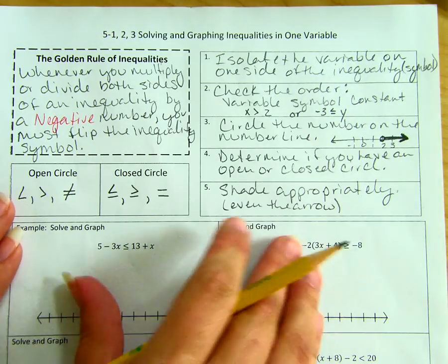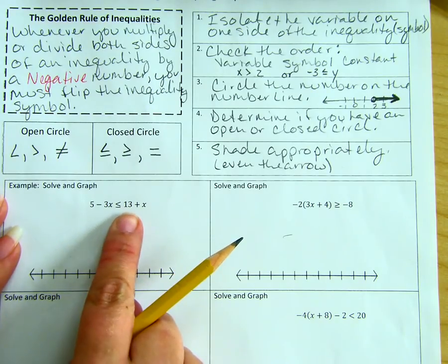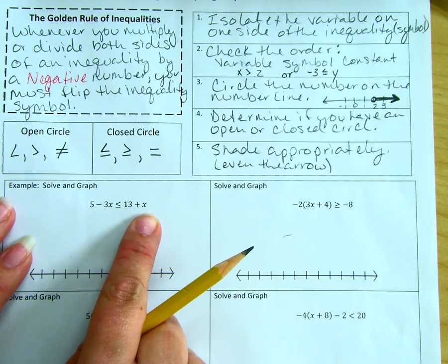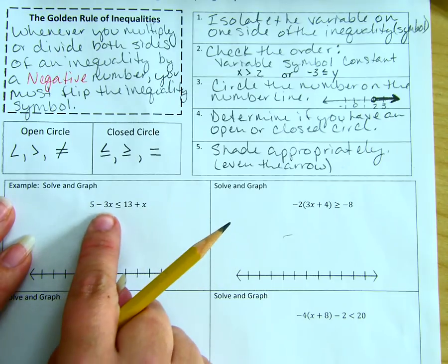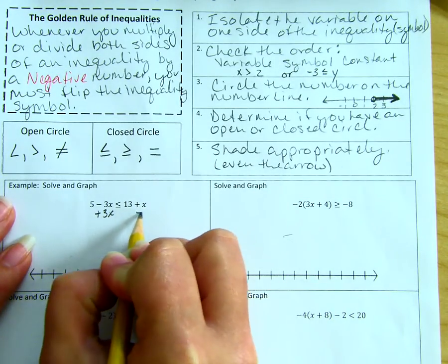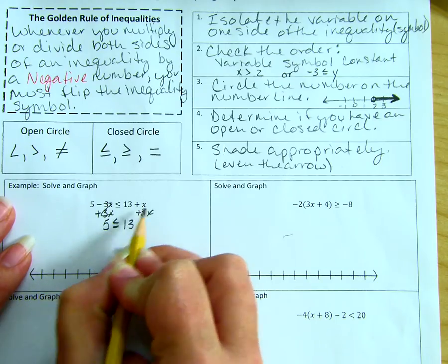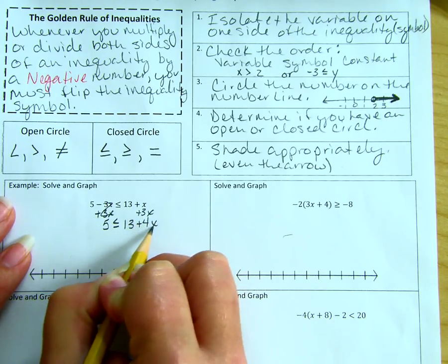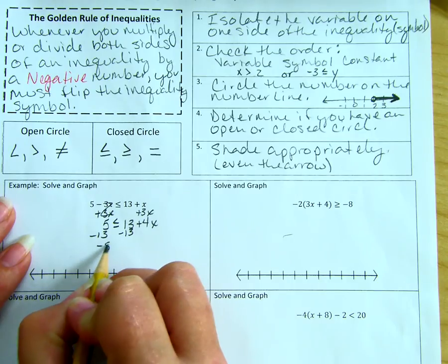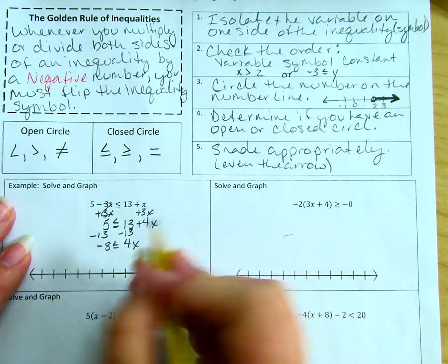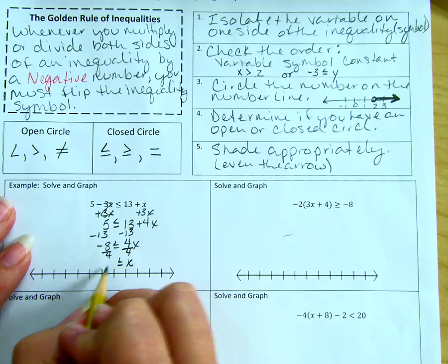And that's how you solve and graph an inequality. The first example is five minus three x is less than or equal to thirteen plus x. Get the variable on one side — I'll add three x to both sides, giving me five is less than or equal to thirteen plus four x. Then subtracting thirteen from both sides gives negative eight is less than or equal to four x. Then dividing both sides by four gives x is greater than or equal to negative two.